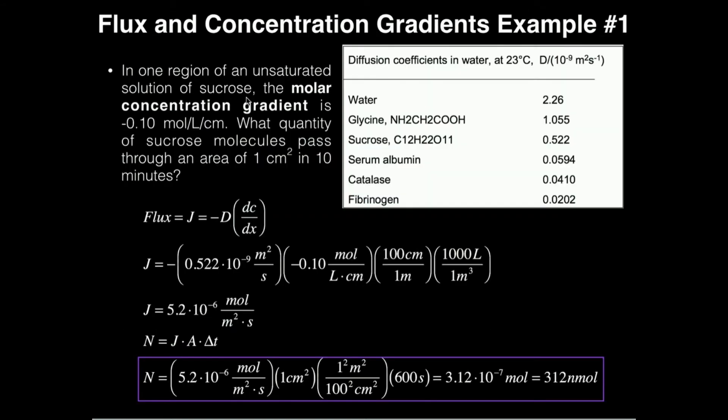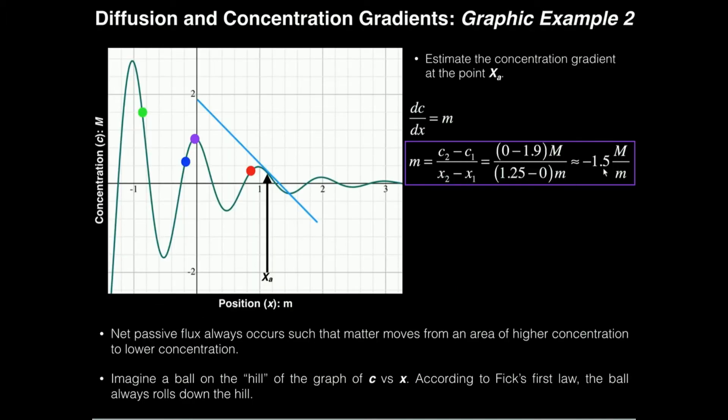Very similar to the one we saw in this other example problem in a previous video where we had negative 0.1 mole per liter per centimeter. So that is a molar concentration gradient.